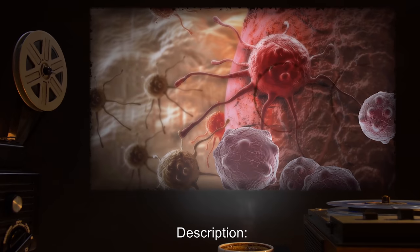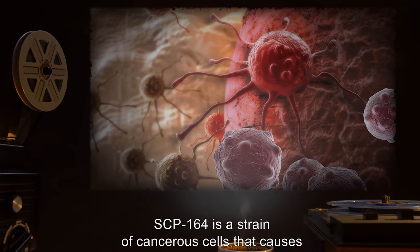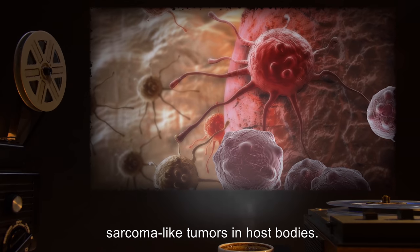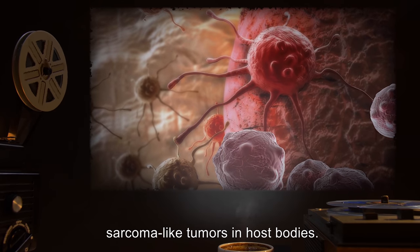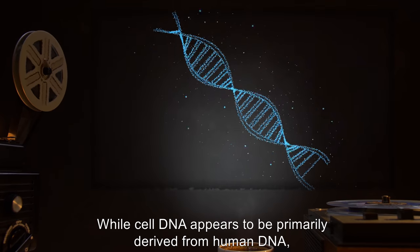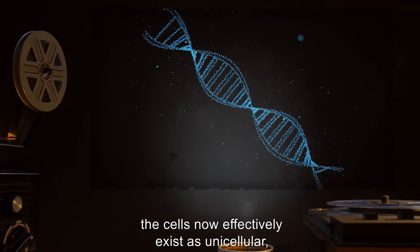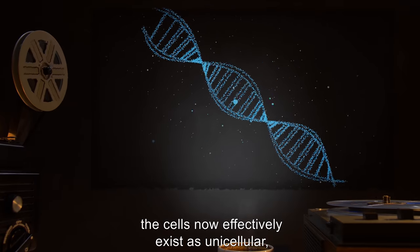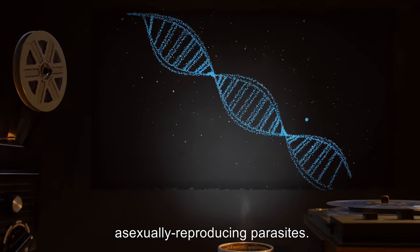SCP-164 is a strain of cancerous cells that cause sarcoma-like tumors in host bodies. While cell DNA appears to be primarily derived from human DNA, the cells now effectively exist as unicellular, asexually reproducing parasites.